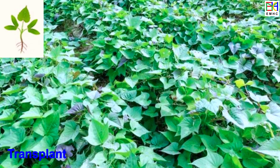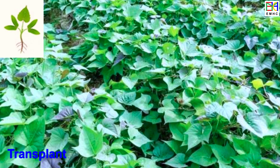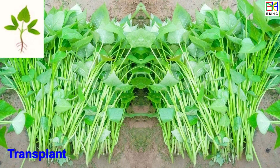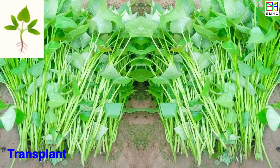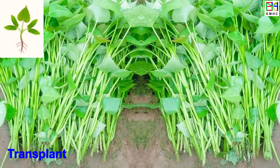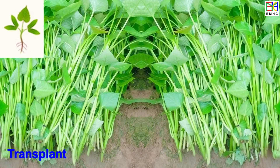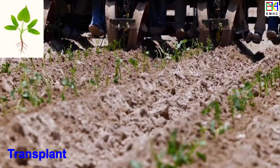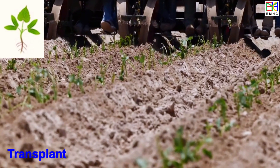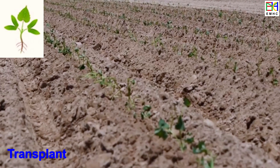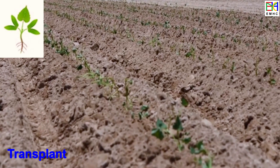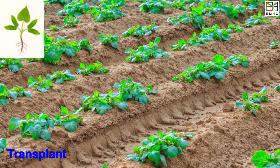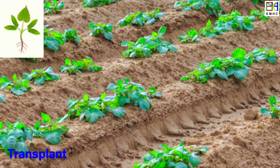Once the sweet potato slips are developed to 6–8 inches, they can be transplanted into the field. The transplanting of slips marks the beginning of the vegetative growth of sweet potatoes. This stage typically lasts for about 2–3 weeks. The slips are usually planted in rows about 12–18 inches apart and 6–8 inches deep in the soil. During this stage, it is important to provide adequate water and nutrients to the newly planted slips to help them establish roots and begin growing.